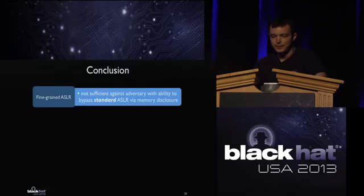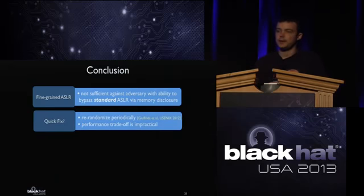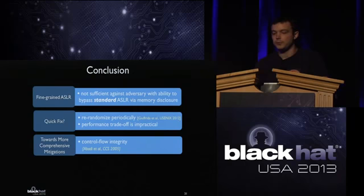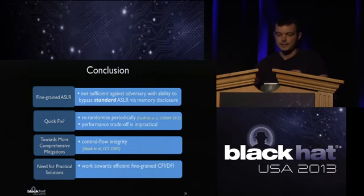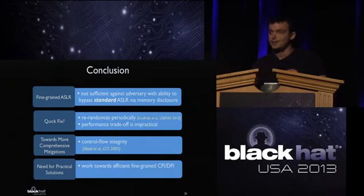In conclusion, our goal was to determine if fine-grained ASLR provides anything beneficial above standard ASLR, and we've clearly shown there is no real advantage. Suggestions like re-randomizing periodically are impractical — doing it fast enough to prevent this attack incurs too much performance overhead. We need to move towards more comprehensive mitigations like control flow integrity — not just these mechanisms, but efficient, practical solutions with low runtime overhead. What we're working towards is more efficient fine-grained control flow integrity and data flow integrity mechanisms.